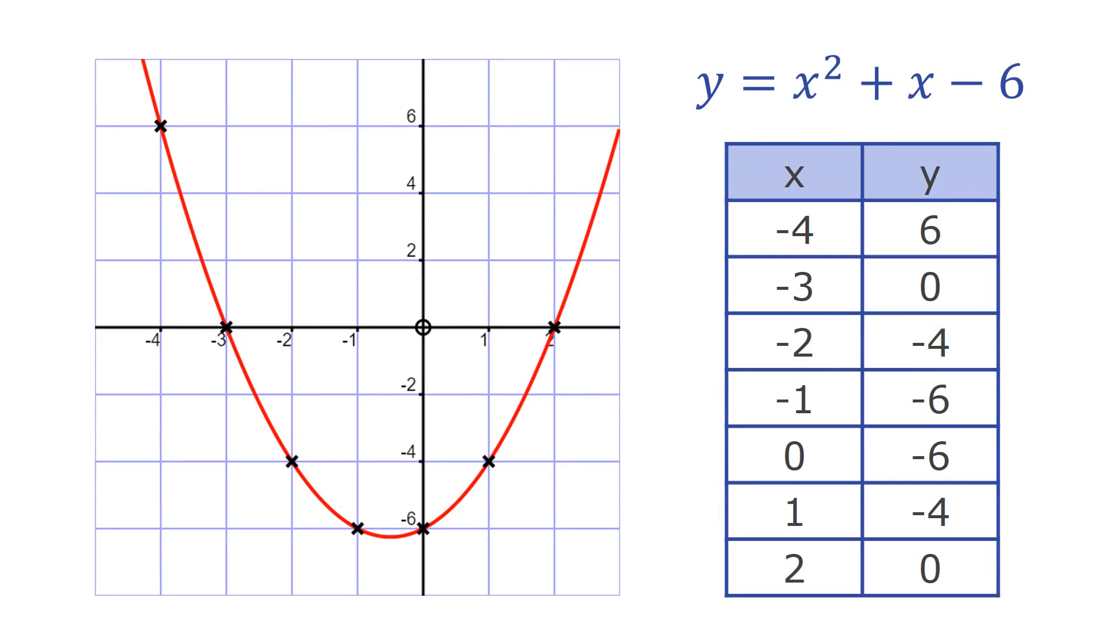Here, we have already worked out the values and plotted the curve. From the table, we can see that y is 0 when x is minus 3, and also when x is 2.